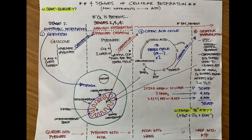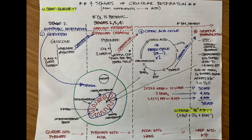This takes place within the cytosol of the cell — within all the fluid supporting the organelles and mitochondria, just floating around. That's where it's happening. So basically, this first stage is all about taking glucose and converting it to pyruvate. Then that pyruvate is oxidized through a process called pyruvate oxidation.